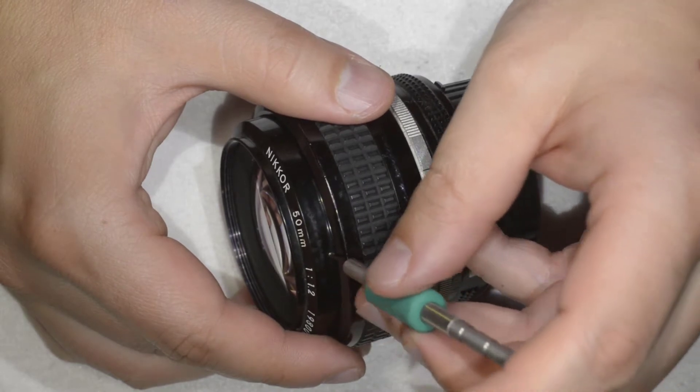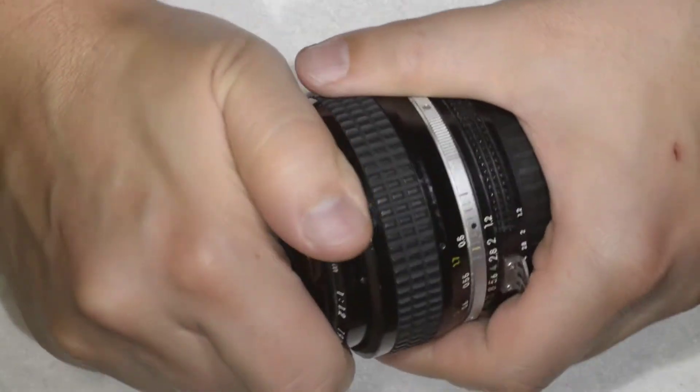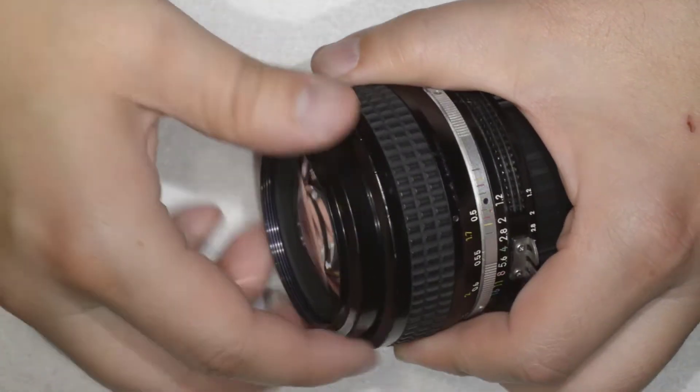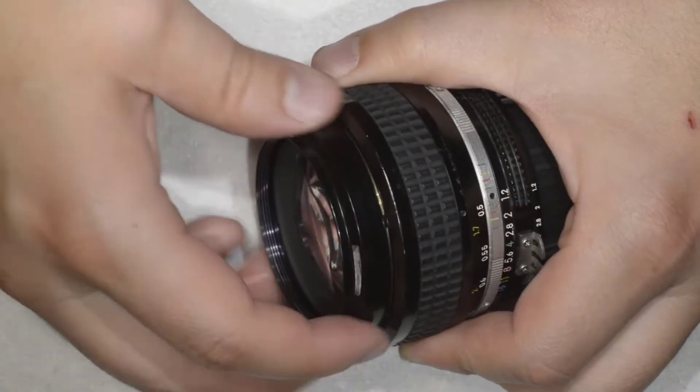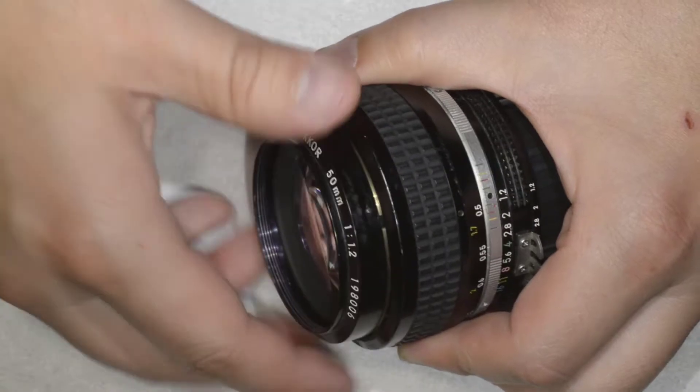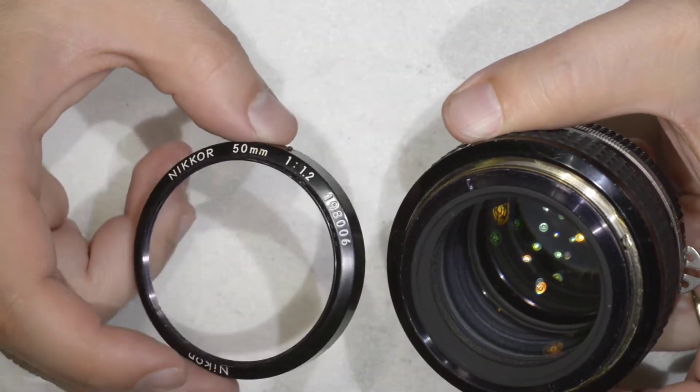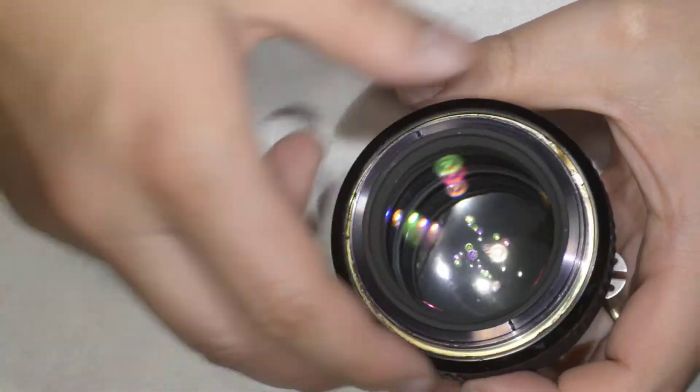And then by doing that you are able to unscrew the front element here, not really the front element, just this ring here which has the serial number and written the Nikkor 50mm 1.2. I will put that aside.